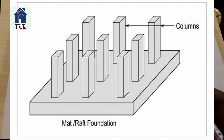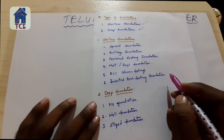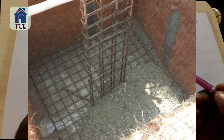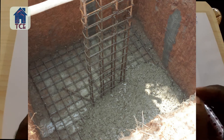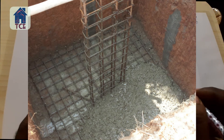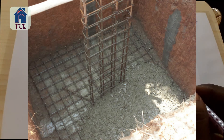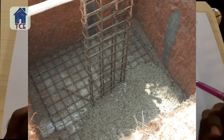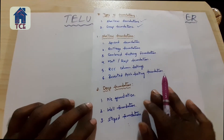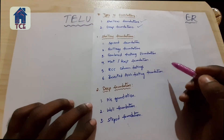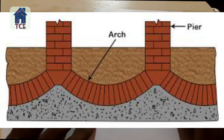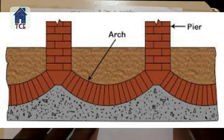The next type is RCC column footing. Also under shallow foundation is inverted arch footing.